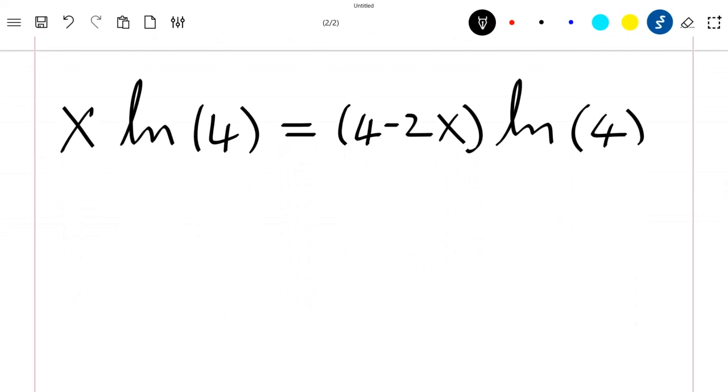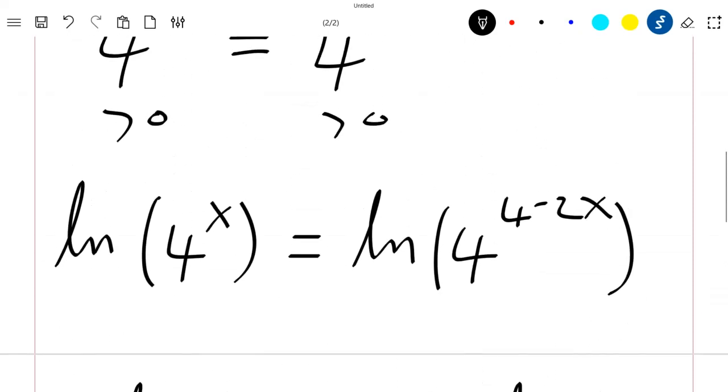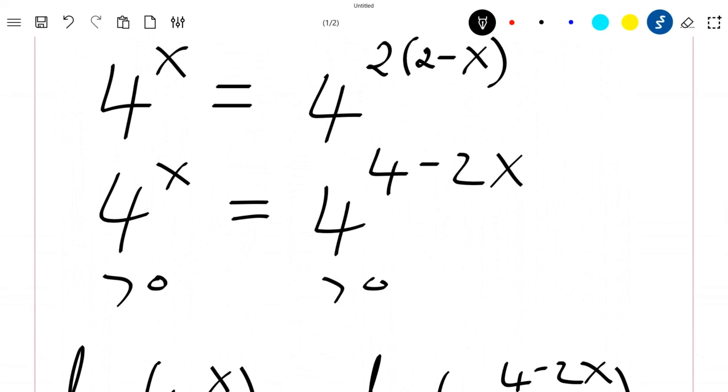You can see that if we simplify by ln of 4 on both sides, we'll just have x is equal to 4 minus 2x. We just came to the same result as if we chose this equal to this.